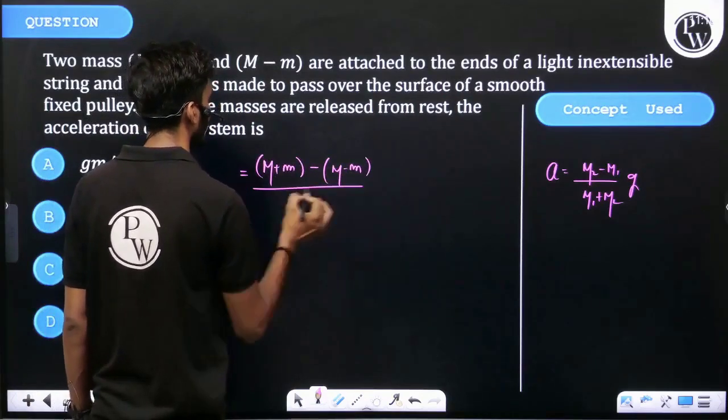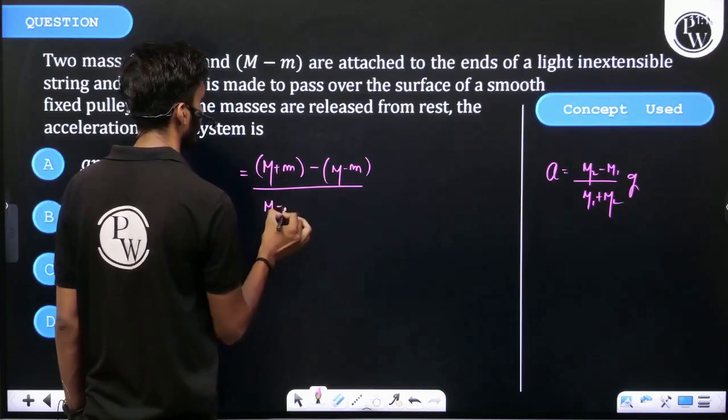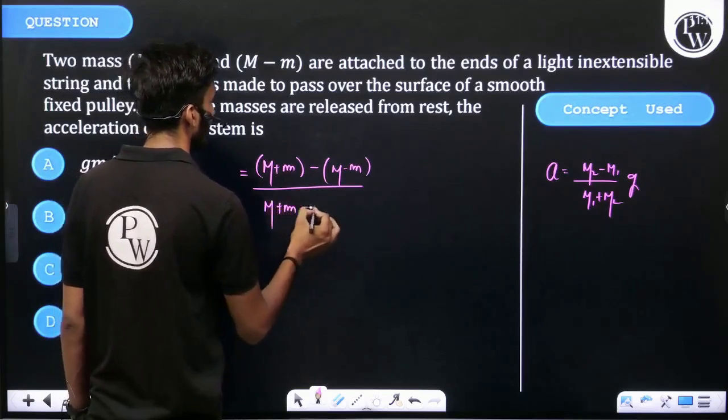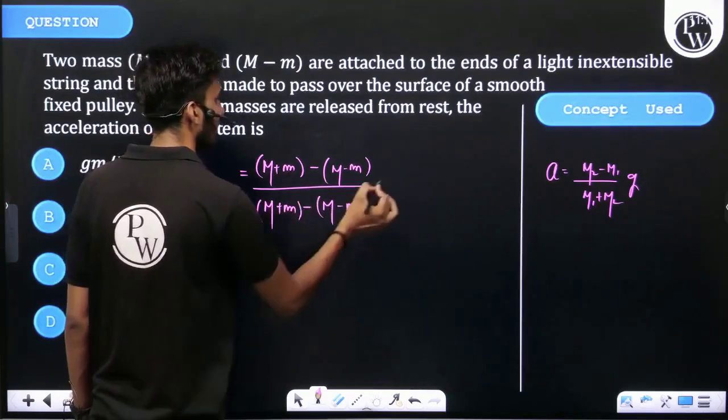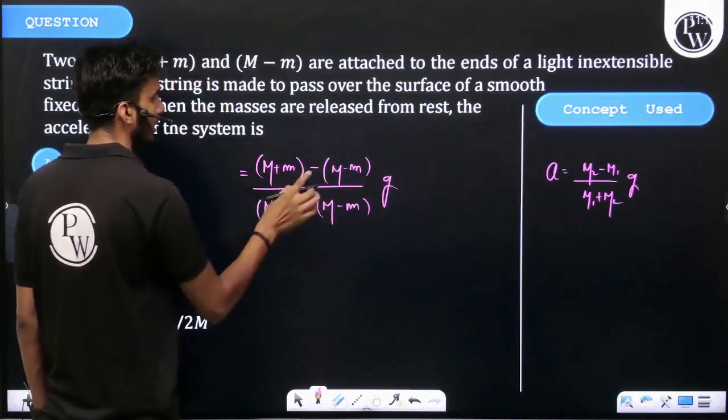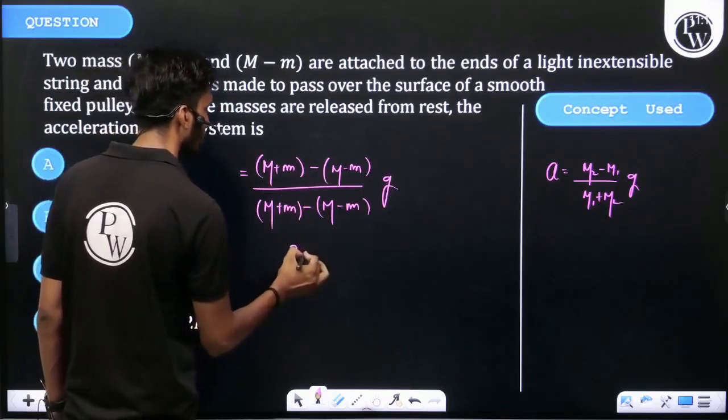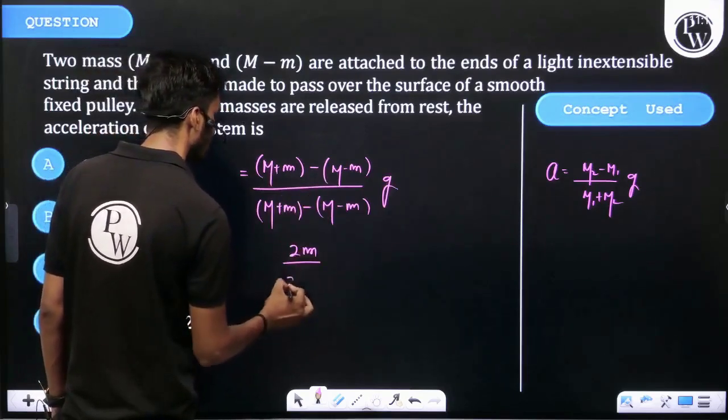upon (M + m) plus (M - m) into g. You know, M should cancel out, capital M cancels out to get 2 small m over 2 capital M.